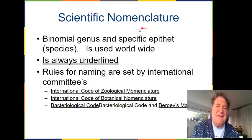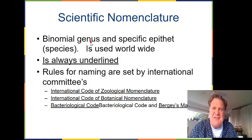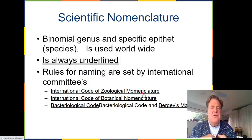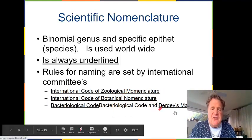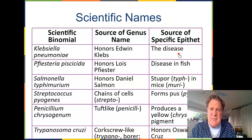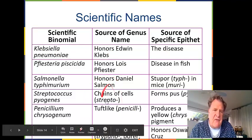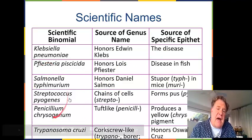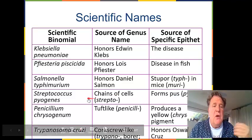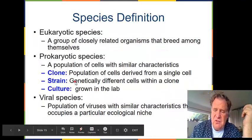Scientific nomenclature uses the binomial genus-species epithet system, which is used worldwide and is always underlined or italicized. The rules for naming are set by international committees — the International Code of Zoological Nomenclature — and you can't just call something whatever you want. For example, Klebsiella pneumoniae: Klebsiella is named in honor of Edwin Klebs, and pneumoniae refers to the disease. Streptococcus pyogenes: strepto refers to the chain shape, and pyo refers to a form of pus. You will need to recognize many of these microorganism names.